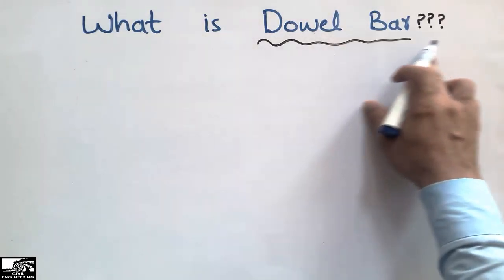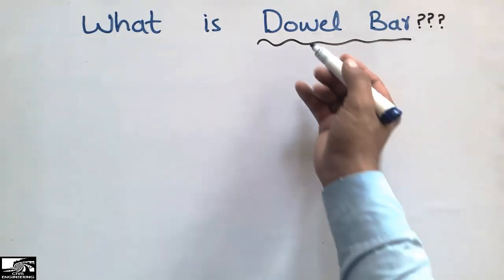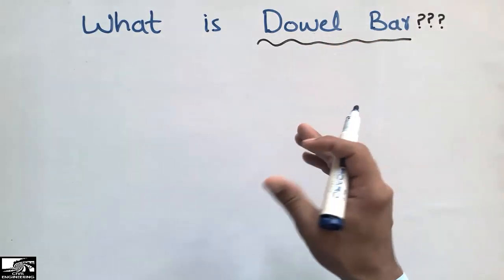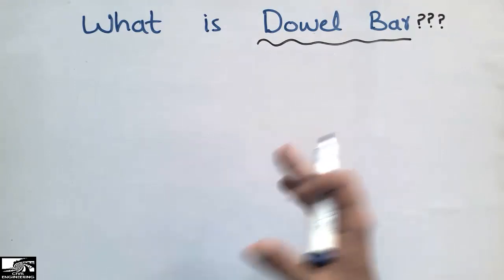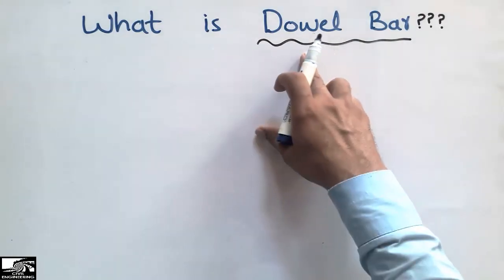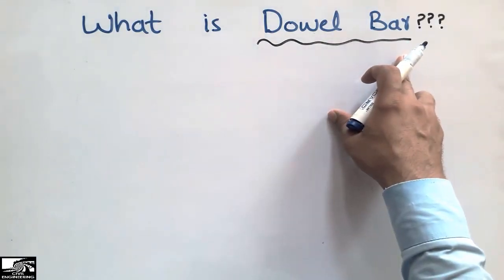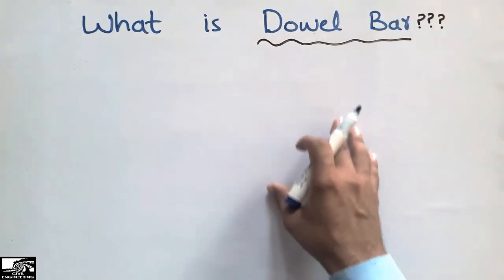The dowel bar is a type of reinforcement, but it is a special type of reinforcement. This term dowel bar is used mostly in the footing and the pier or the column.